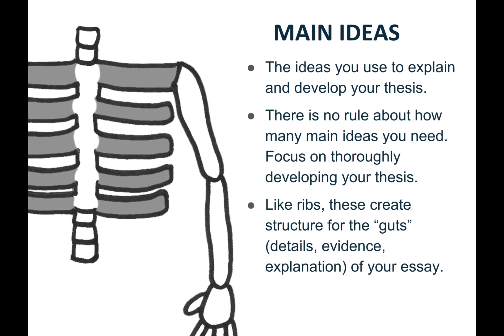Next, you can color in the ribs on your skeleton. These ribs symbolize your main ideas — the ideas you use to explain and develop your thesis. There's no rule about how many main ideas you need. In the past you might have been told you have to have three body paragraphs, and that's often a good rule of thumb in junior high to ensure students develop their topic fully. By the time you're in high school you're developing more complex ideas that might require more than three. So instead of worrying about how many paragraphs to write, focus on thoroughly developing your thesis with as many main ideas as you need. Like ribs, these main ideas create structure for the guts of your essay — the details, evidence, and explanation you use to support your main ideas.